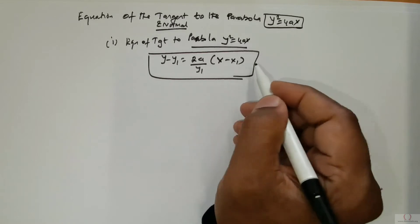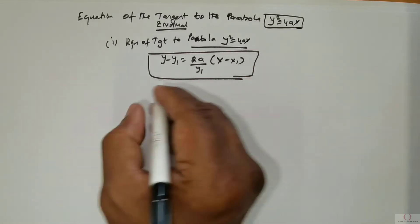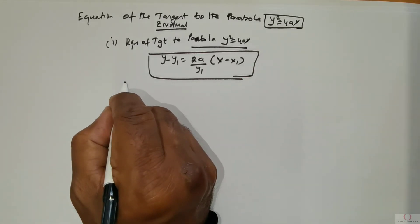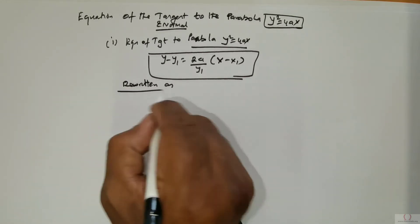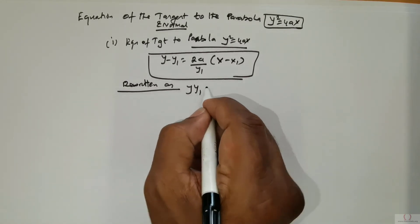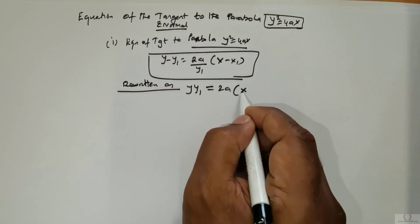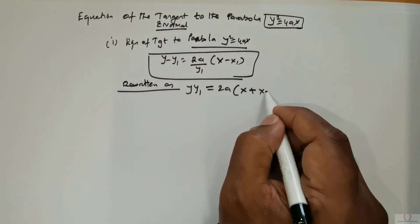Have this in mind. Now this can be simplified and rewritten as yy₁ = 2a(x + x₁).